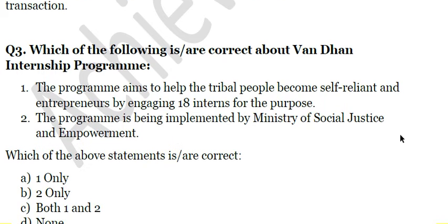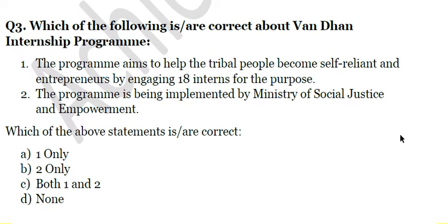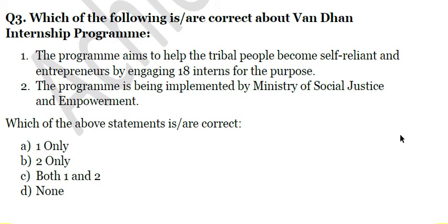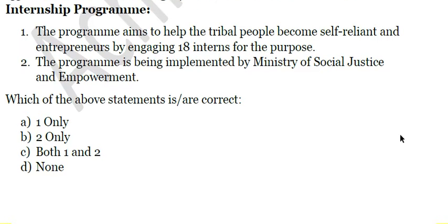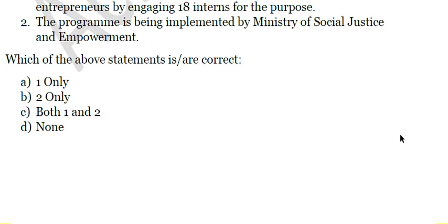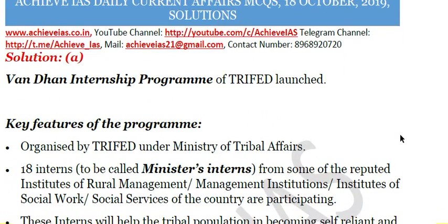Next question: Which of the following is correct about the 'One Done Internship Program'? First — the program aims to help tribal people become self-reliant and entrepreneurs by engaging 18 interns. Second — the program is implemented by the Ministry of Social Justice and Empowerment. Only the first statement is correct. The program is not implemented by the Ministry of Social Justice and Empowerment; rather, it is implemented by TRIFED under the Ministry of Tribal Affairs.